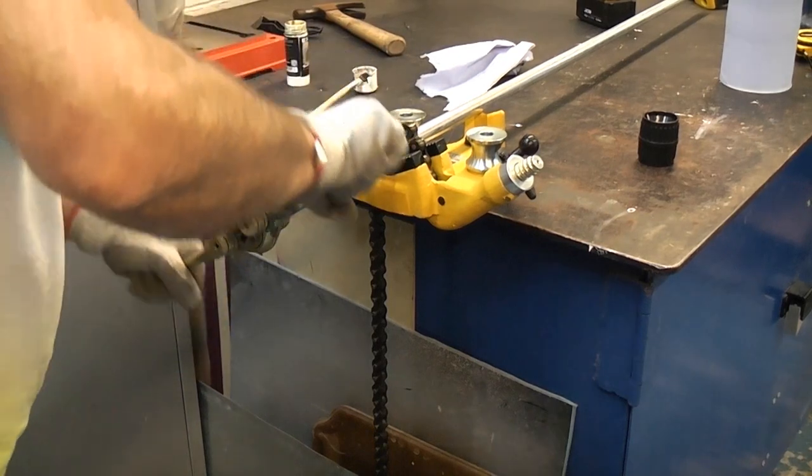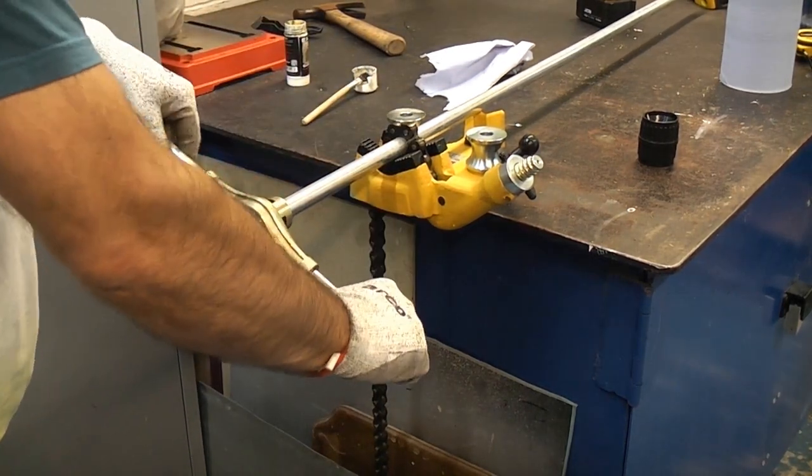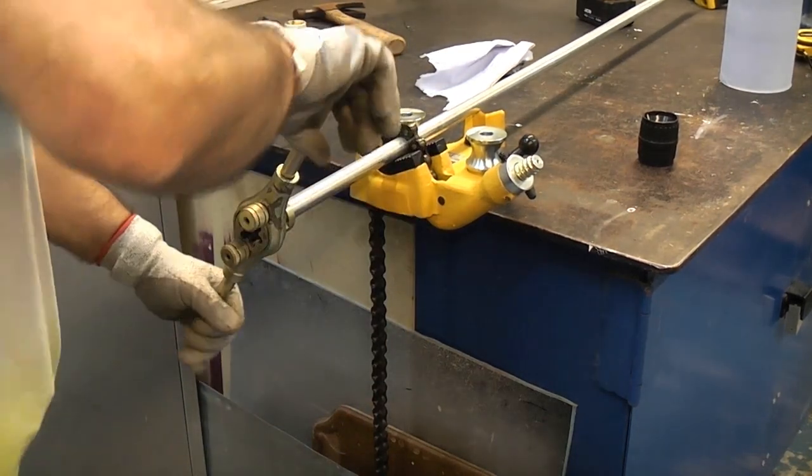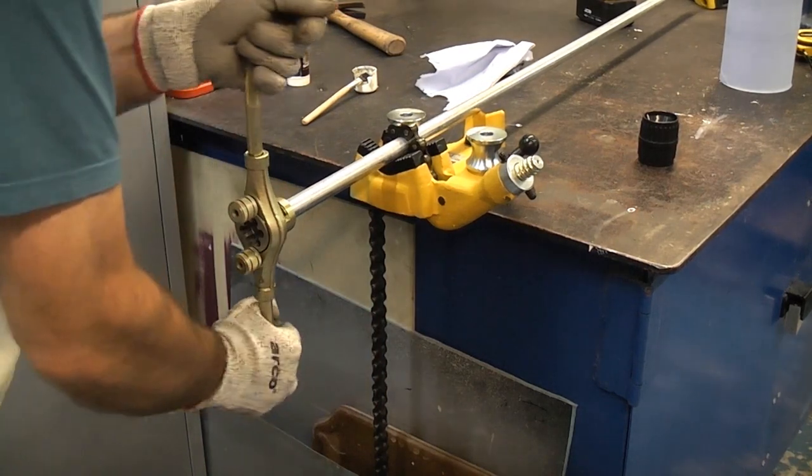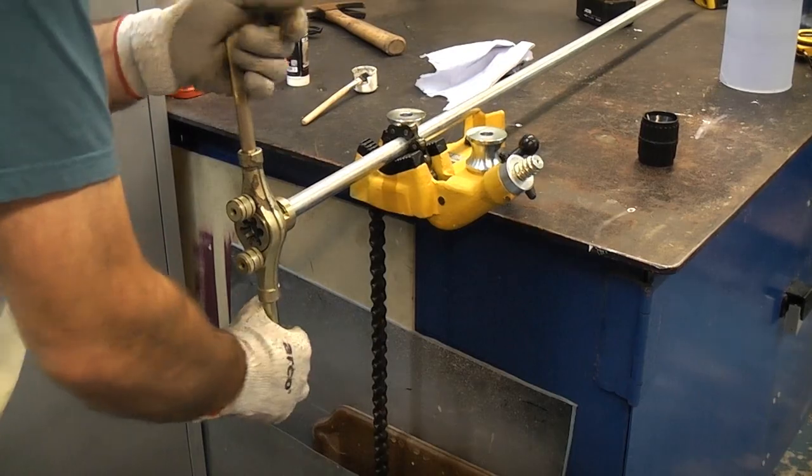If you ever try to thread a pipe such as conduit or a steel pipe in a normal vise, it is incredibly difficult to grip and it will often slip out. By using one of these, it'll grip it perfectly and will not distort the pipe.